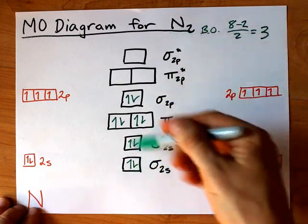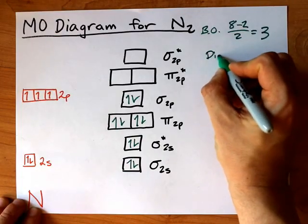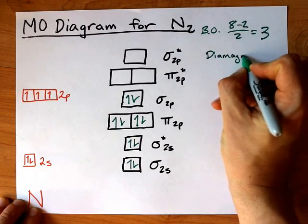The other thing is that all of these electrons are paired up, which makes N2 a diamagnetic species.